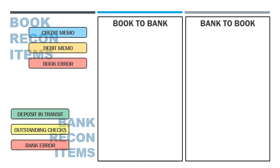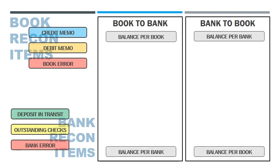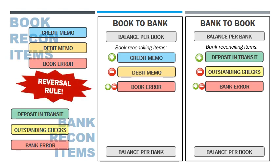The other two bank reconciliation methods are book to bank and bank to book. These methods start with the unadjusted cash balance of one party and end with the unadjusted cash balance of the other party. The formulas for the two methods start similar to the adjusted method — up to that point, the formulas should give us the adjusted cash balance. But these formulas don't end there, since the goal is the unadjusted cash balance of the other party. From here on, the rule is to reverse the signs of the other party's reconciling items.